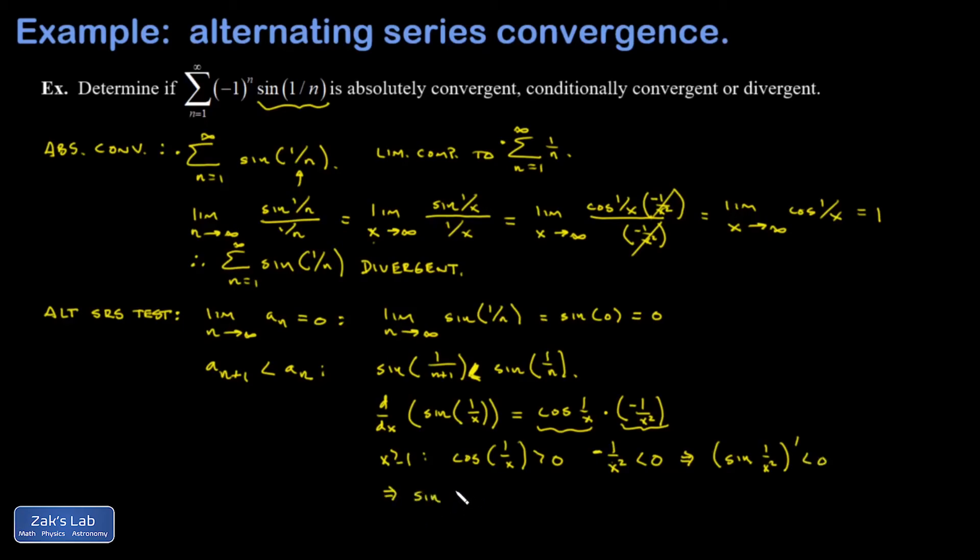I'll go back and talk about it in terms of integers now. Sine of 1 over n is decreasing. And that means that sine 1 over a larger value is always less than sine 1 over a smaller value of n. So that gets the second part of the alternating series test done.